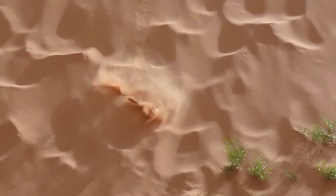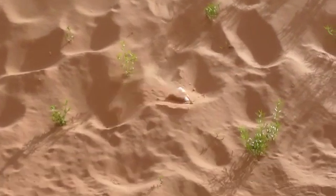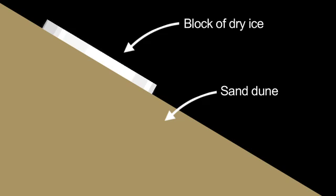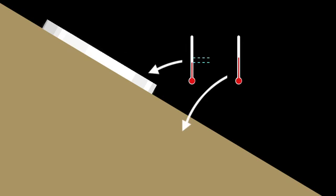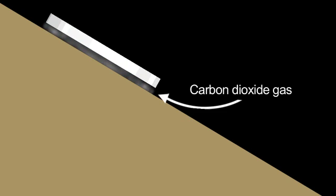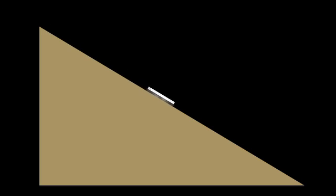The blocks move down the dune slope and carve out a shallow trough. When the block of ice is on the sand surface, the sand is just a little bit warmer, and so it causes a cushion of air to form. That lifts the block just a little bit, so when it moves forward it's lubricated and can slide very easily.